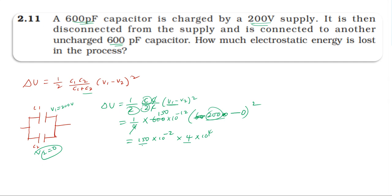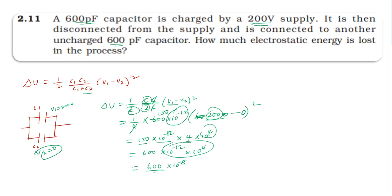Continuing: 150 multiplied gives 600. So 600 into 10 power minus 12 into 10 power 4 equals 6 into 10 power minus 8, then 6 into 10 power minus 6 Joules. Therefore delta U equals 6 into 10 power minus 6 Joules energy loss by the shortcut method.